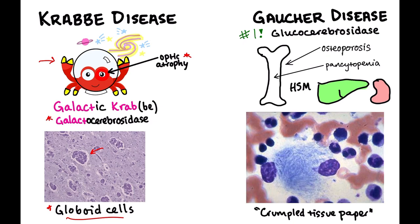Gaucher disease is the most common of these lysosomal storage disorders. Remember bone, bone, bone: it gives you osteoporosis, avascular necrosis of the femoral head, and pancytopenia from bone marrow involvement. It can also cause hepatosplenomegaly. Unlike the others, you don't get prominent neurological symptoms. The characteristic pathologic finding is cells with the appearance of crumpled tissue paper from the bone marrow.